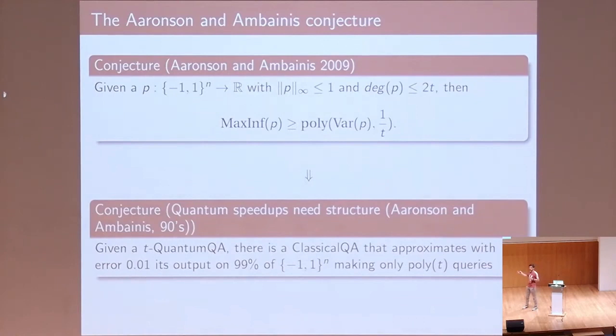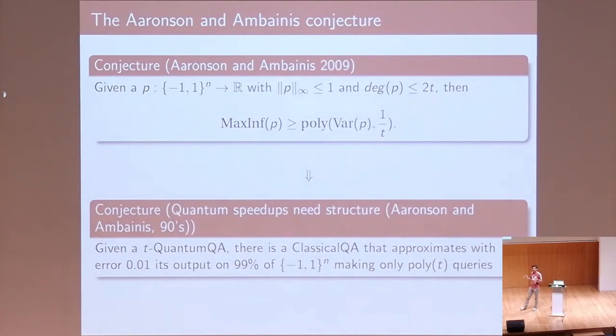This result says that there is always a variable responsible for a large fraction of the total change of the polynomial. To simulate these polynomials classically, you query the most influential variable, restrict the polynomial to that queried value, and iterate. After a polynomial number of iterations, the variance becomes very low, so you can output the expectation and be correct almost everywhere. If true, this would prove the simulation conjecture that exponential quantum speedups need structure.